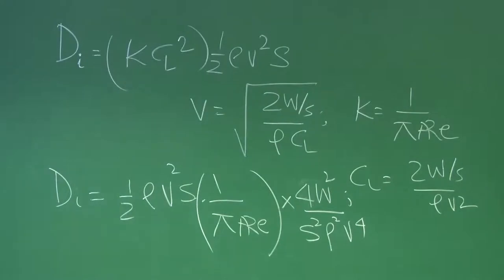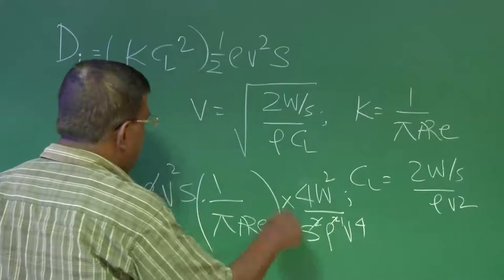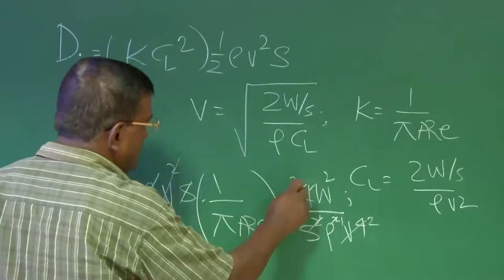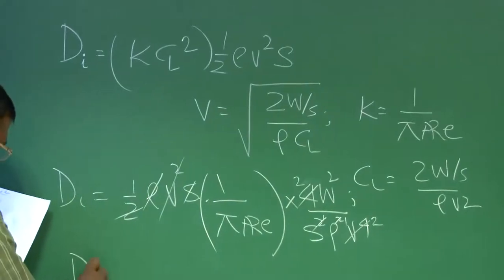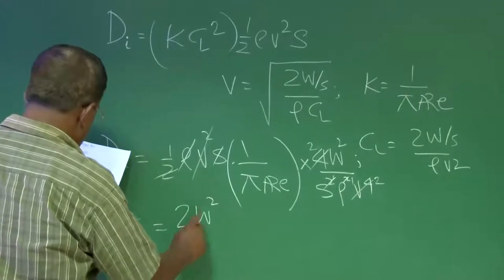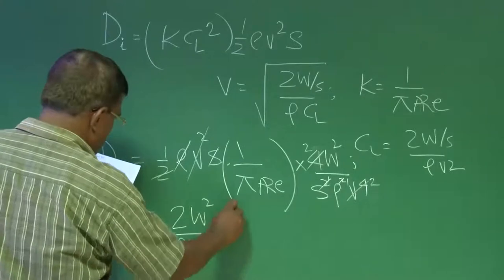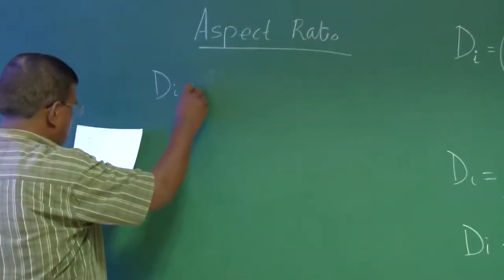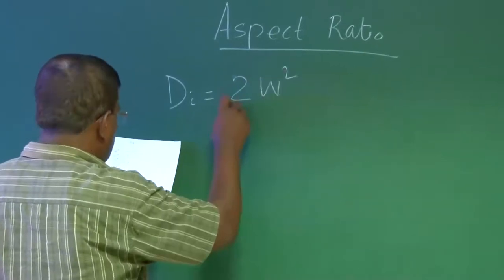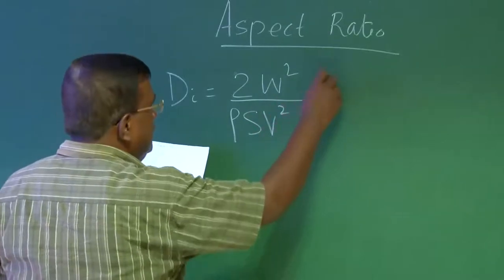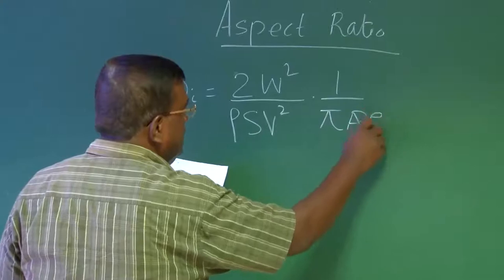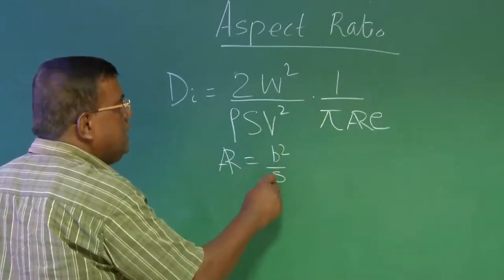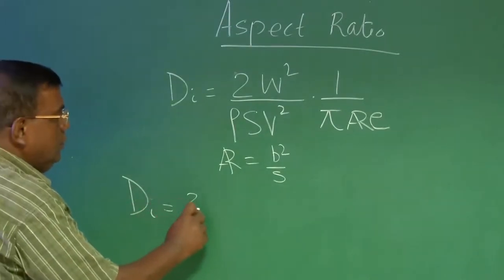This is the induced drag. Now see, I could easily reduce this power S, V square, it is V square. So this will be 2, 4 and some are here 2, so 2. So you get DI is equal to 2 W square by rho S V square into 1 by pi aspect ratio into E. So what is aspect ratio E? And what is aspect ratio? We have defined this as span square by S. So then DI becomes 2 W square by rho S V square into 1 by pi aspect ratio E.